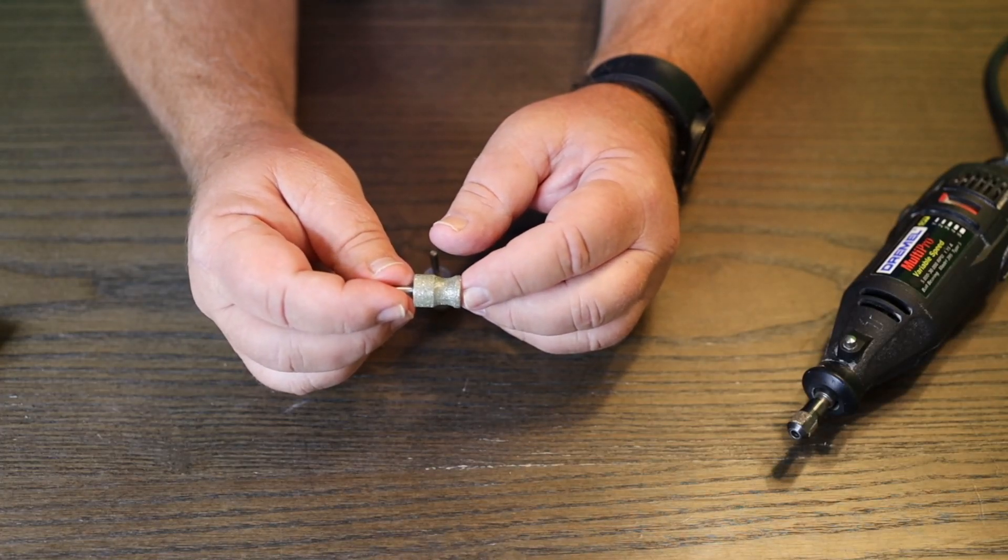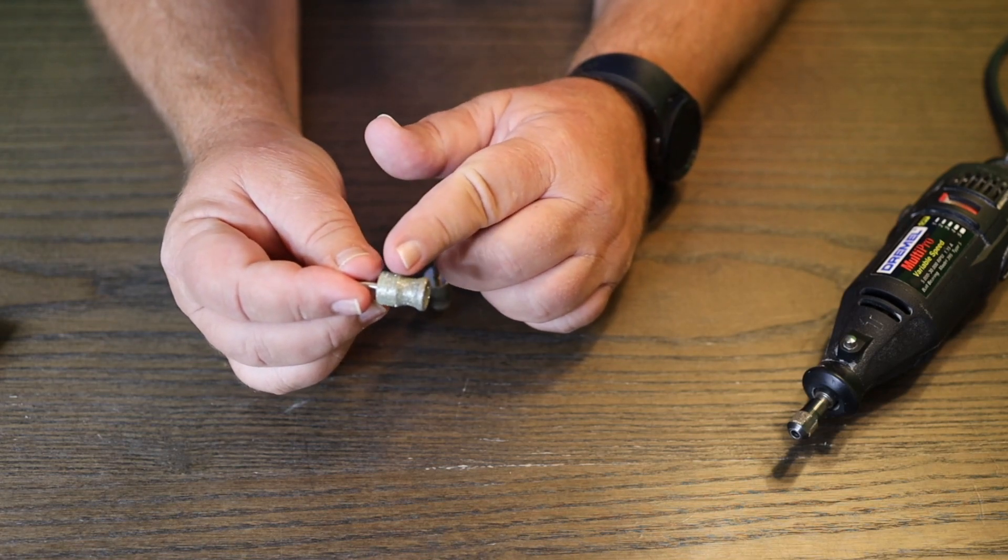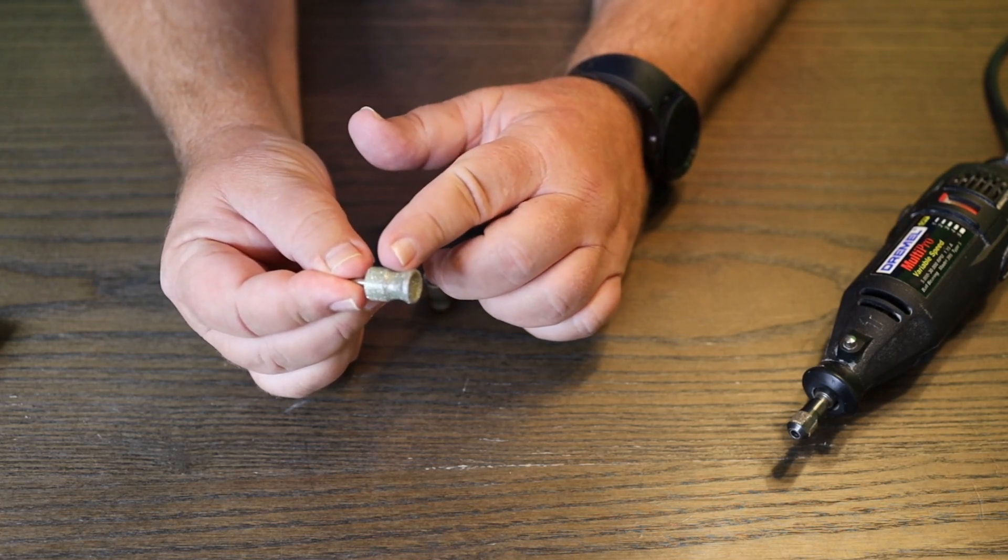Well, today we're taking a look at the Diamond Rotary Nail Grinder. They're bits for your dog's paws. You can put their paws right up in here and it'll smooth them off.